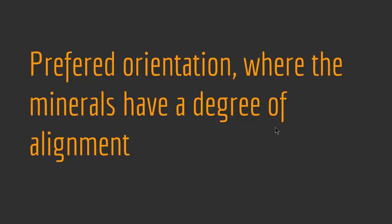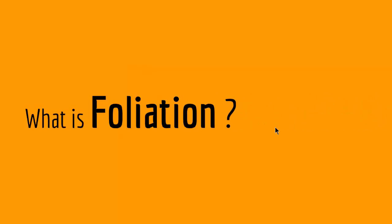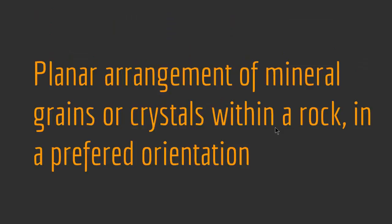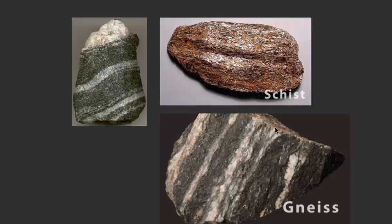A preferred orientation where the minerals have a degree of alignment is called a foliation. A foliation is a planar arrangement of mineral grains or crystals within a rock in a preferred orientation. The minerals in a foliated metamorphic rock are oriented in a parallel or subparallel arrangement. Foliated metamorphic rocks are generally associated with regional metamorphism, and foliation is a fundamental characteristic of metamorphic rocks. These rocks are all metamorphic rocks — you can see the grains have some sort of preferred orientation, or in more scientific terms, they are foliated.